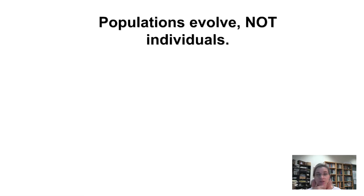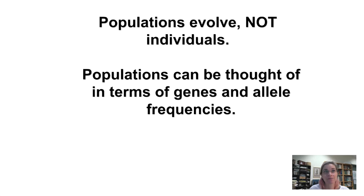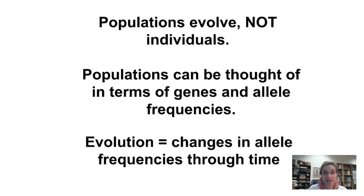When we looked at phenotypic variation in the last module, we noticed how the difference between populations through time is evolution — populations evolve, not individuals. This is the key difference between Darwin's scientific theory of evolution compared to Lamarck's non-scientific explanation. As we bring genetics in, we move to the ultimate causation of phenotypic variation: genetic variation. Populations can be thought of in terms of genes and allele frequencies. Evolution is therefore changes in allele frequencies through time.